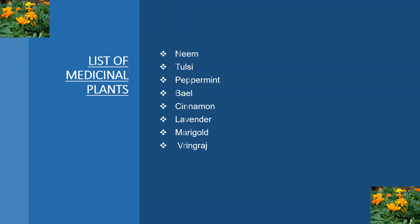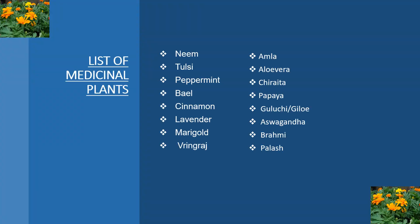Ethnobotany. List of Medicinal Plants: Neem, Tulsi, Peppermint, Bale, Cinnamon, Lavender, Marigold, Vringridge, Amla.